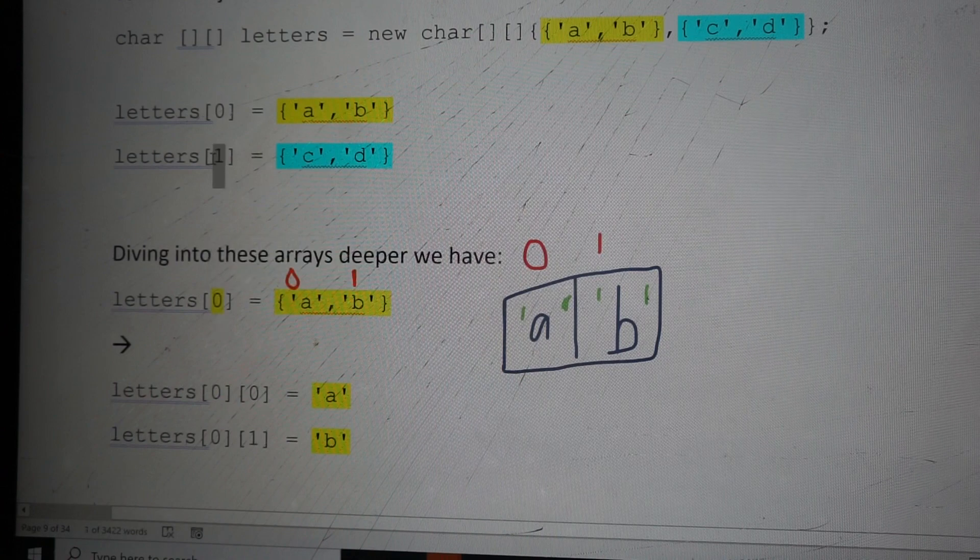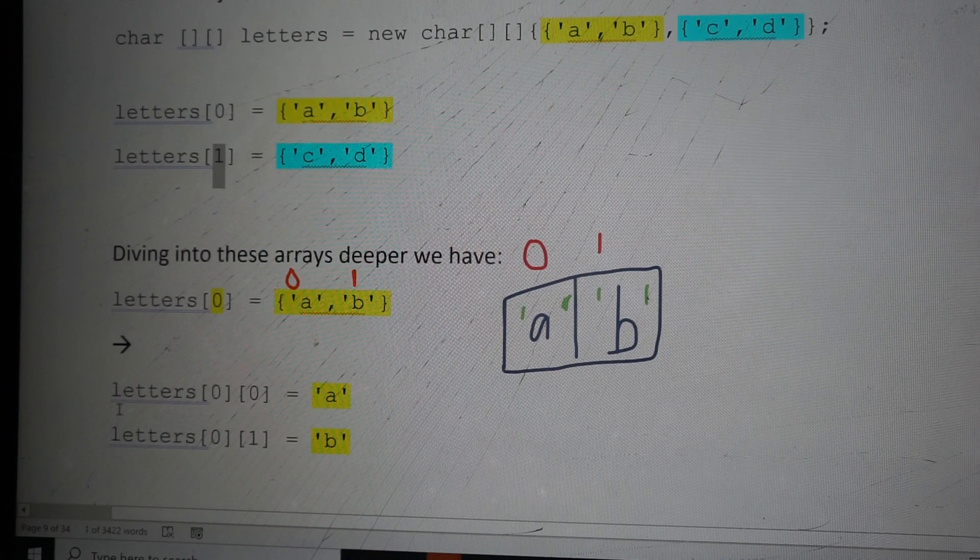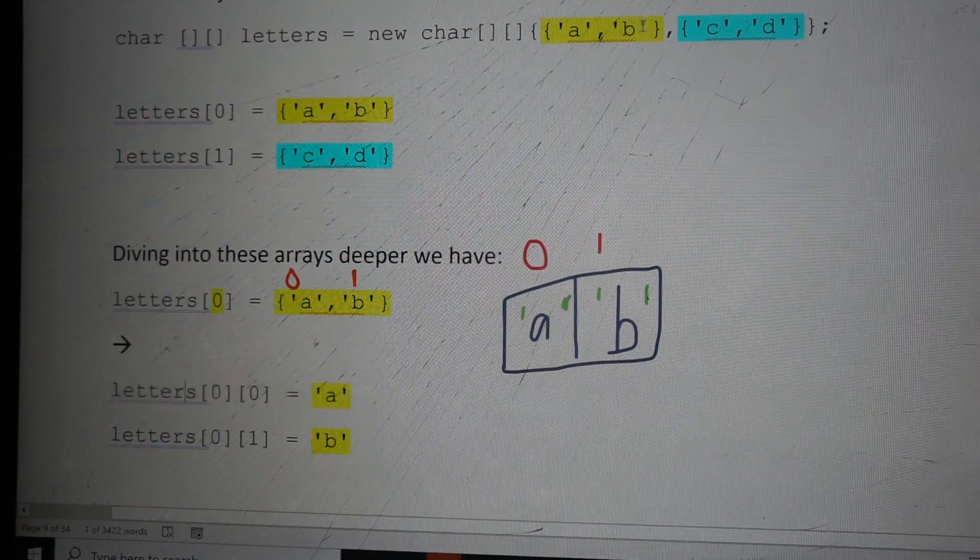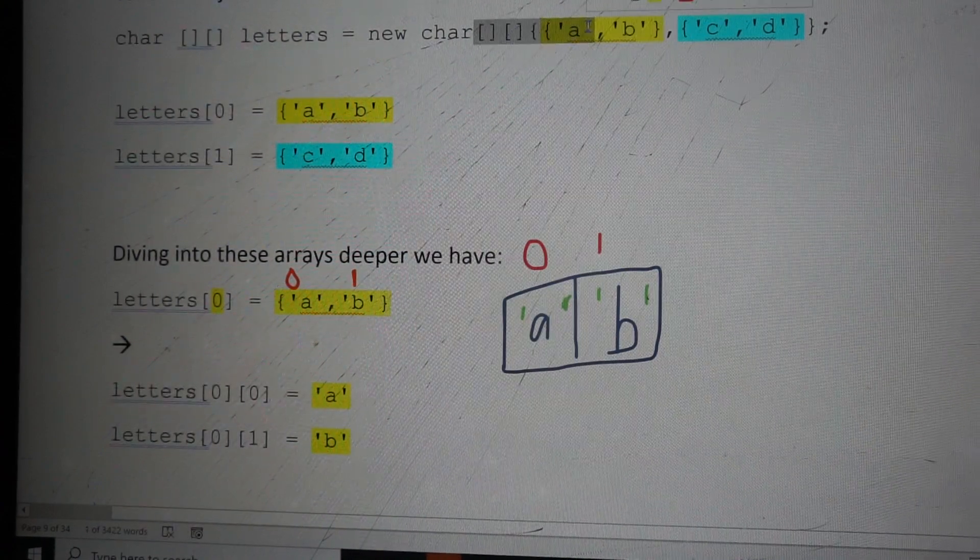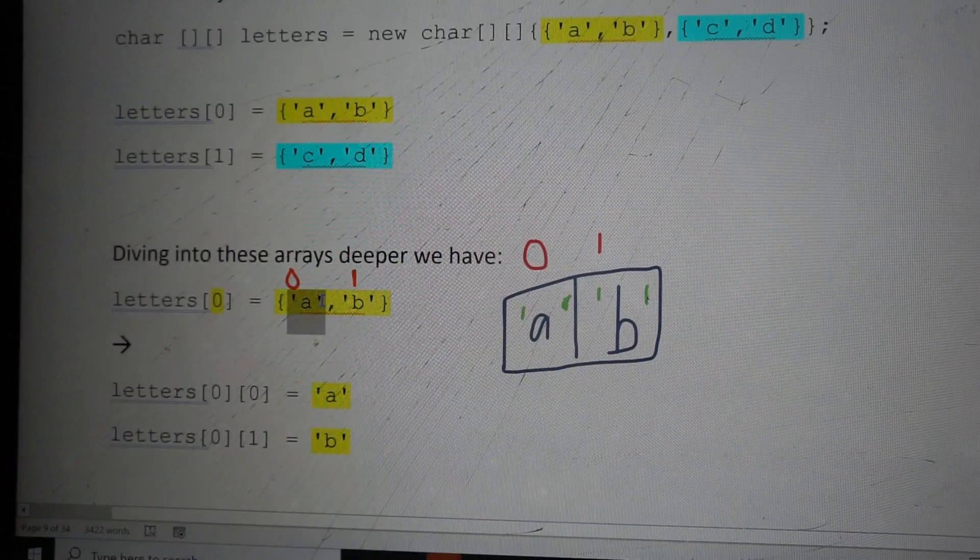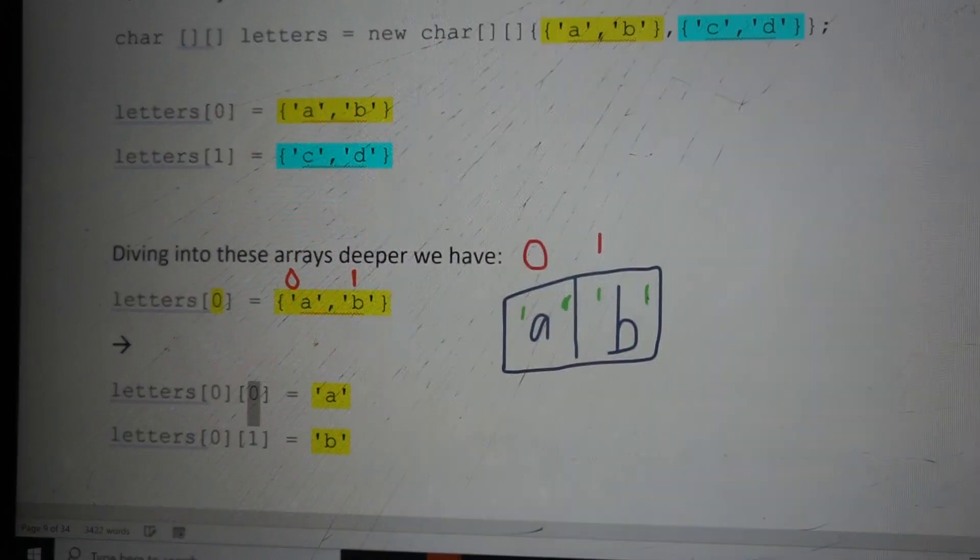And letters[1] would tell us that we would choose the blue one, which is the second 1D array. So if we want to access A, we have to first say, how will we get this yellow one? To get this yellow one, I'm going to have to go into letters[0]. And once I'm inside it to access A, I just have to go to the 0th element.